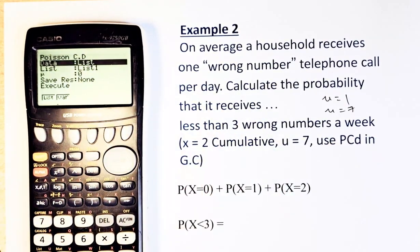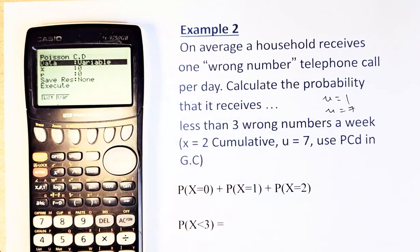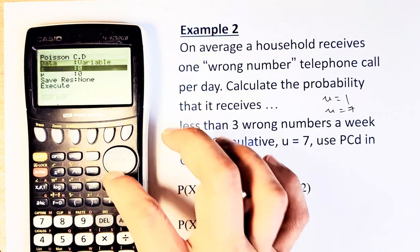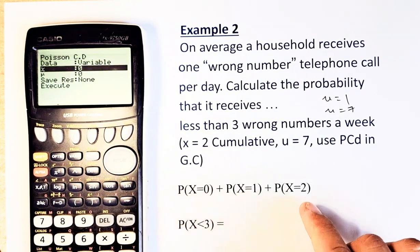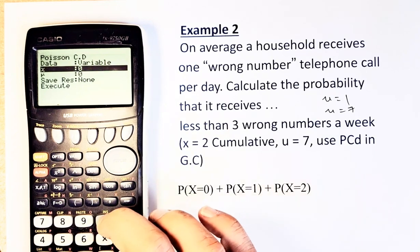And then now, again, we are going to input the data. Because you are inputting variables, so you put F2 first, Variable. And then you are going to put X. Because you are going to start from zero to two. That's where it ends to. So X = 2.